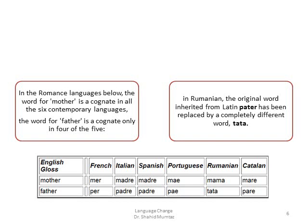The word for 'father' is a cognate in only five of the six languages. In Romanian, the original word inherited from Latin 'pater' has been replaced by a completely different word, 'tată', which is not related to the original Latin.